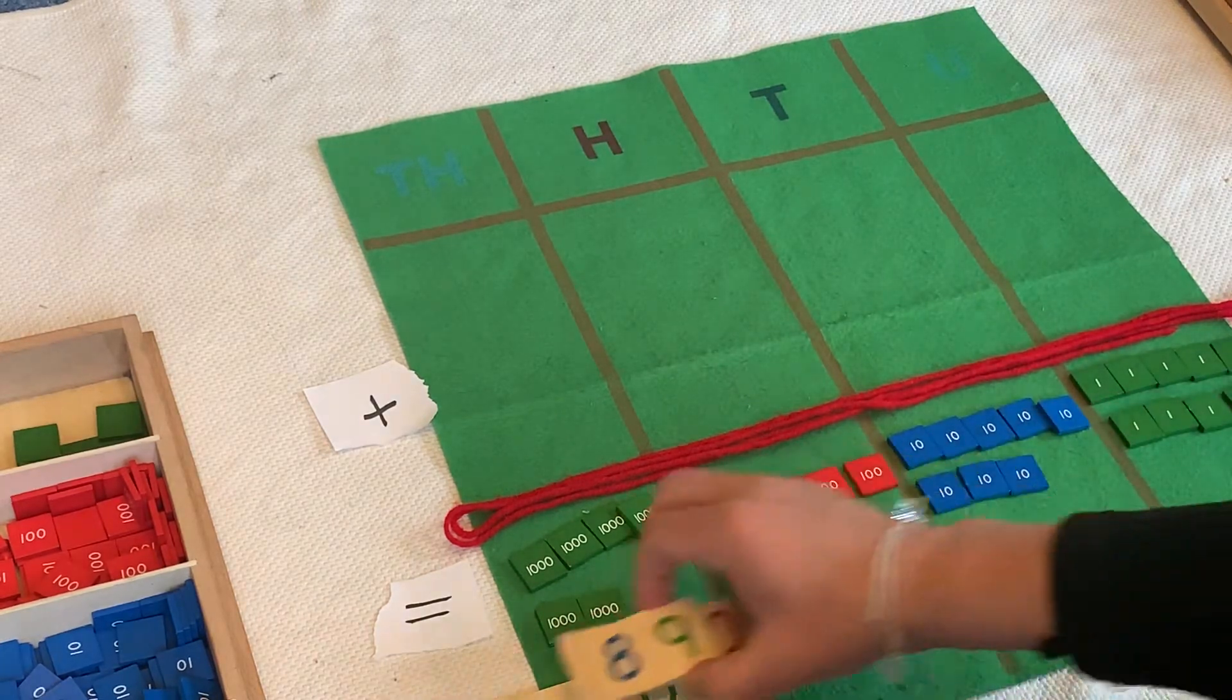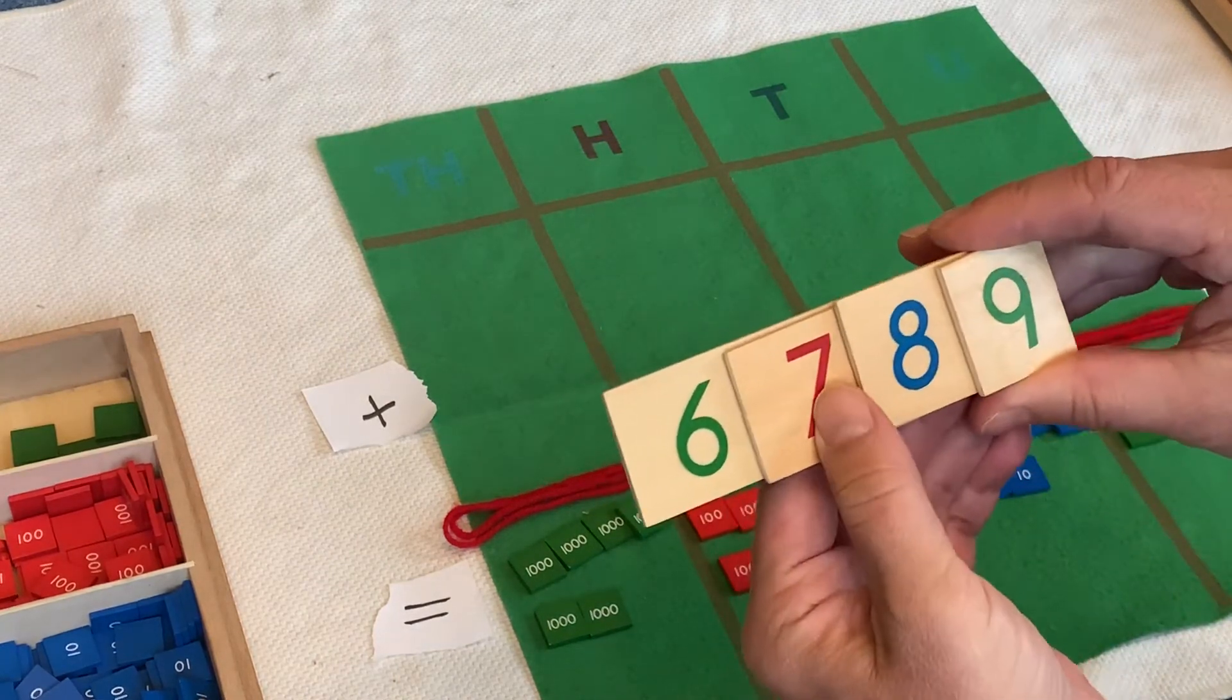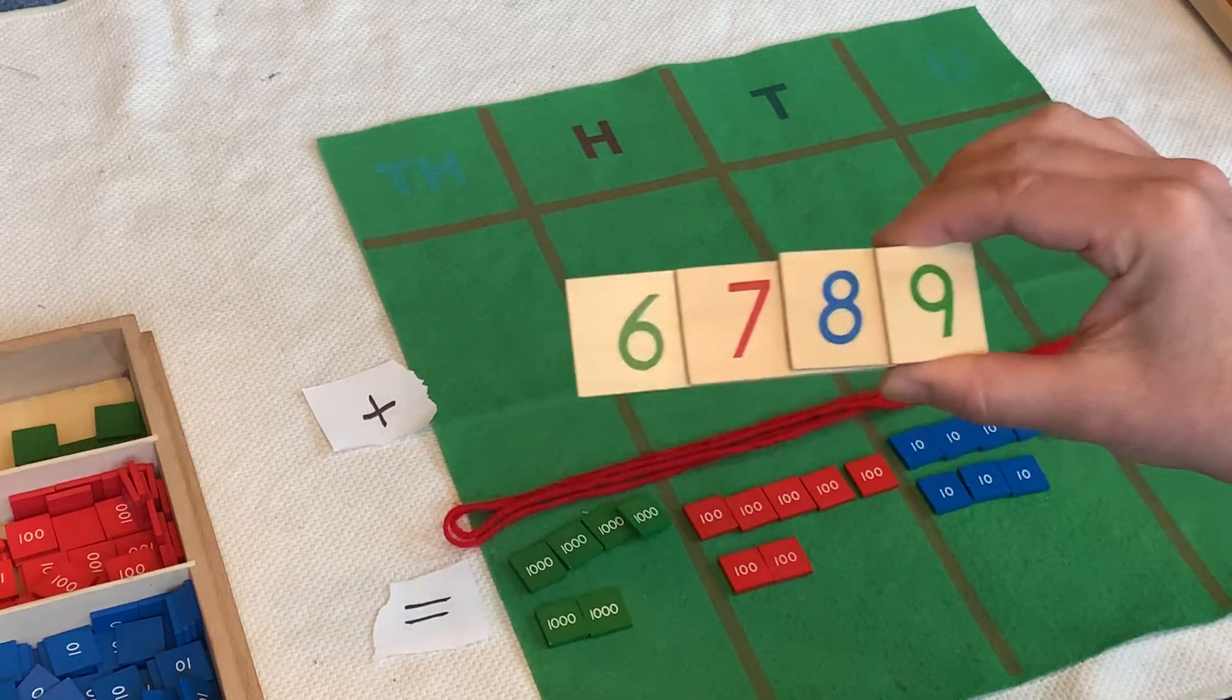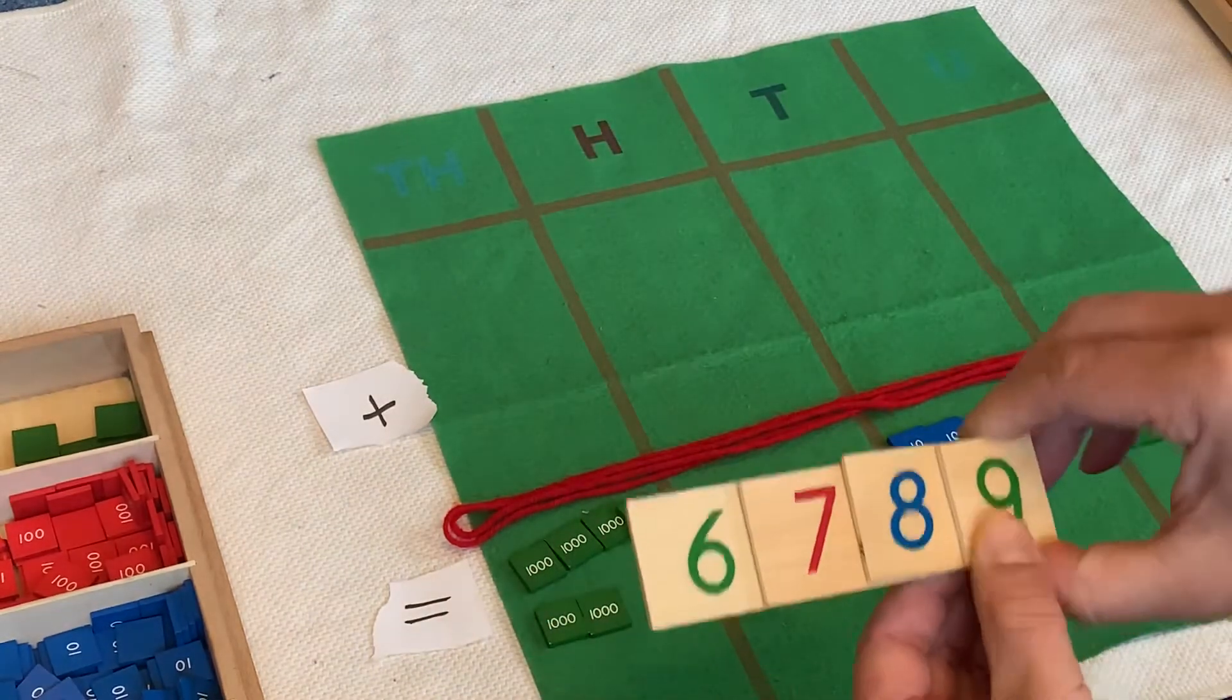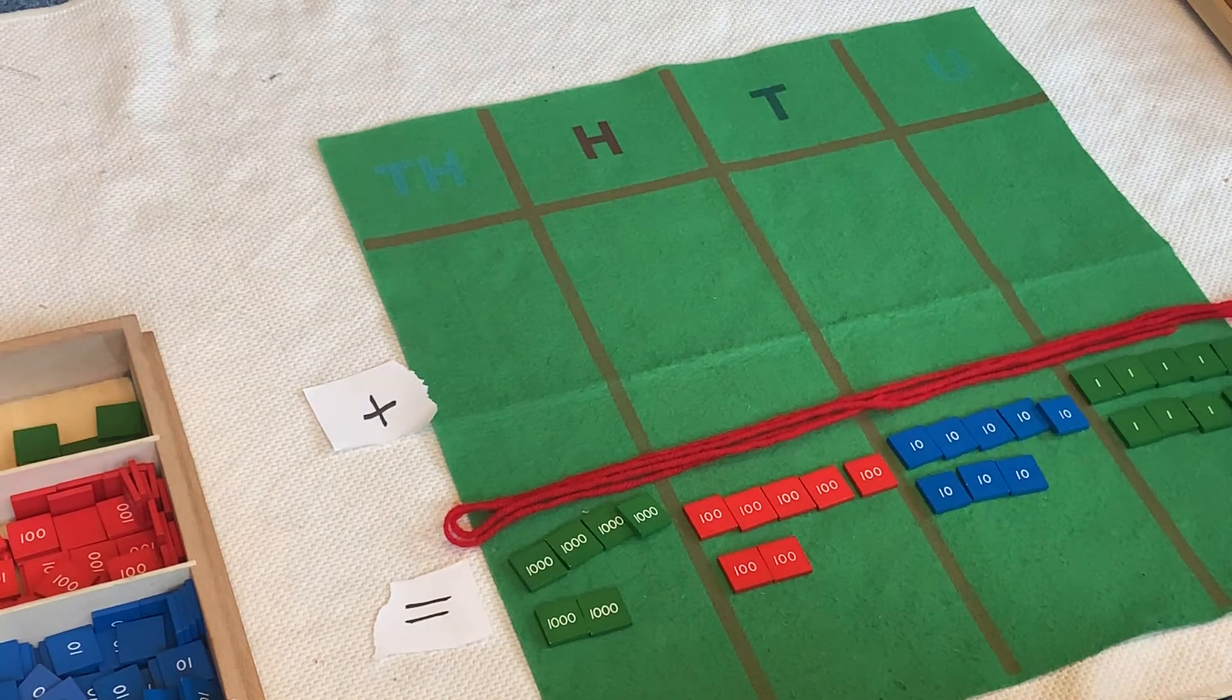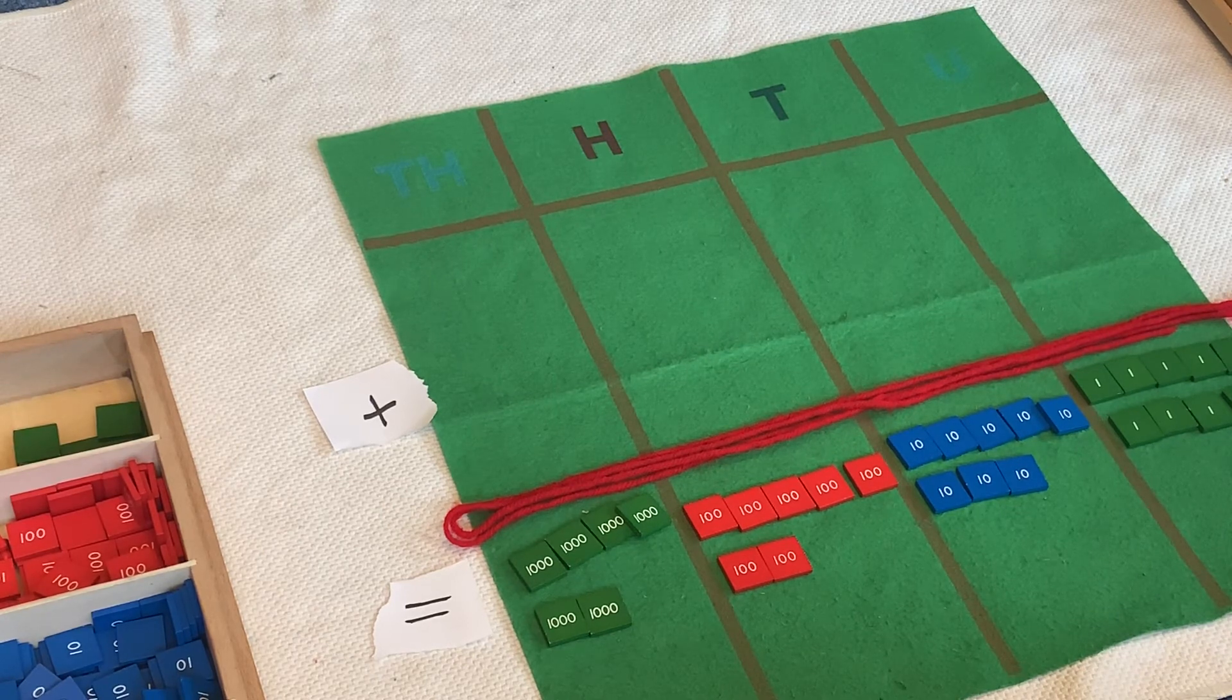Let's cover up all those zeros by doing our magic slide. Meow. And here's our answer, 6,789. And that matches the answer on the back of our card. Ta-da. That's how we do static addition using the stamp game. Have fun doing this in your house with your problems. Talk to you later. Bye-bye.